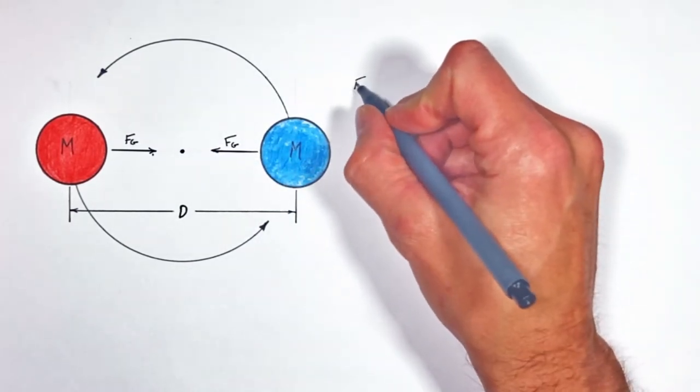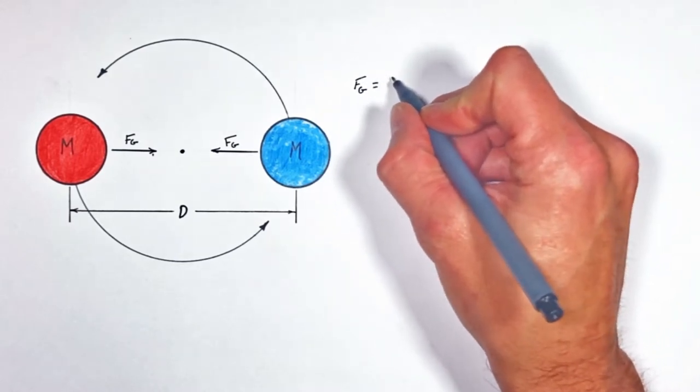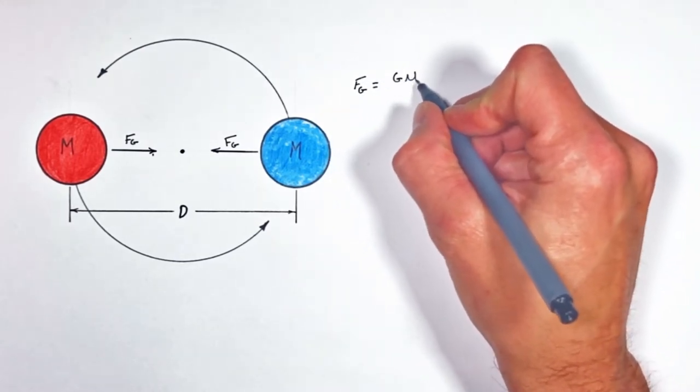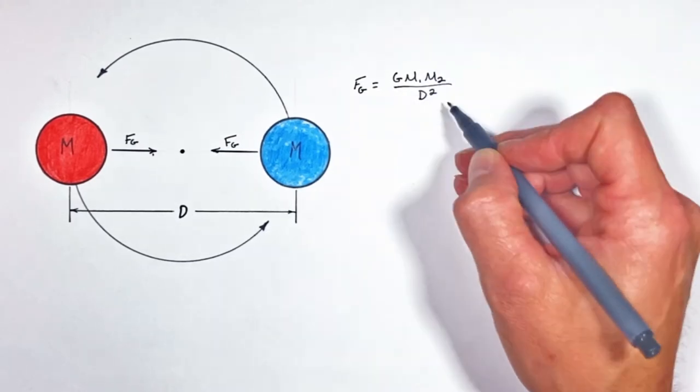Now the force of gravity is given by Newton's law of universal gravitation, where G is the gravitational constant, m1 and m2 are the two masses, and d is the distance between the two masses.